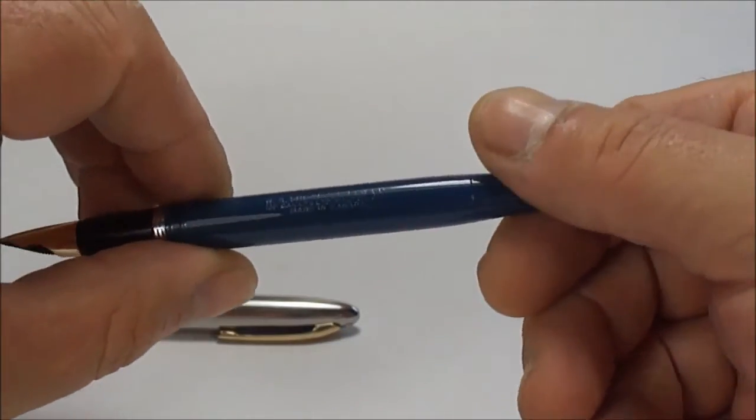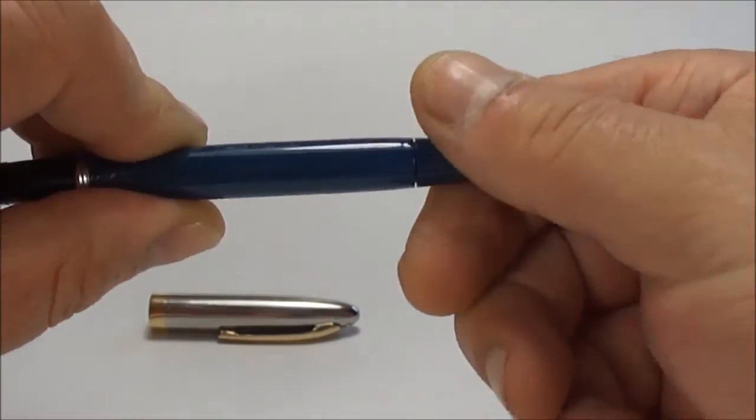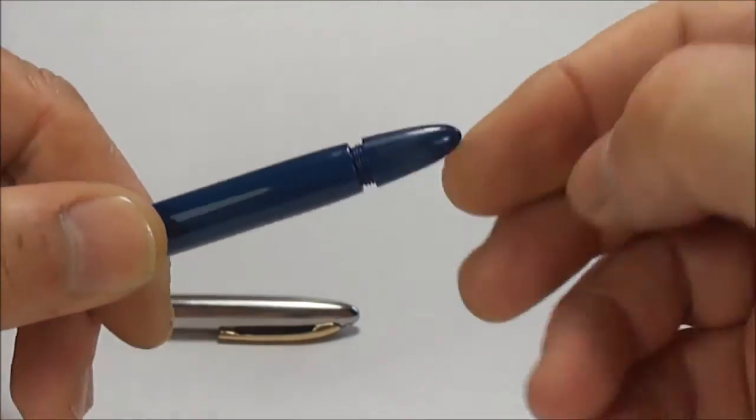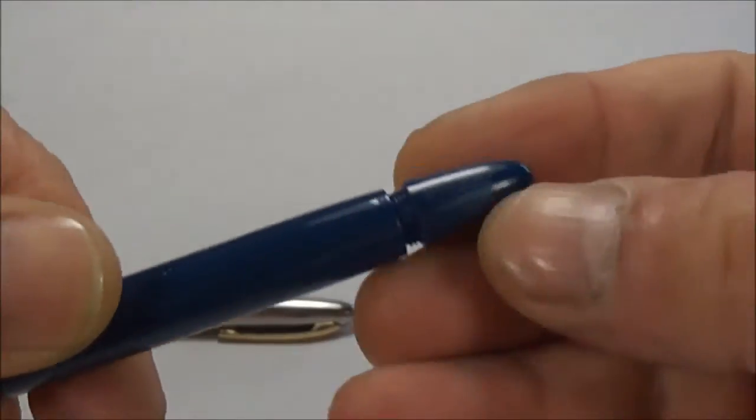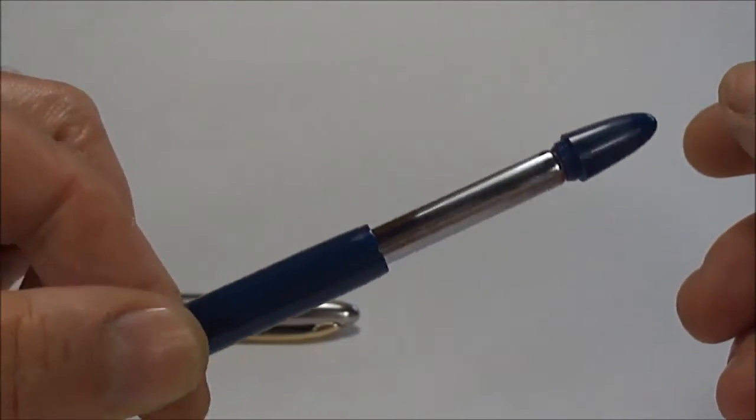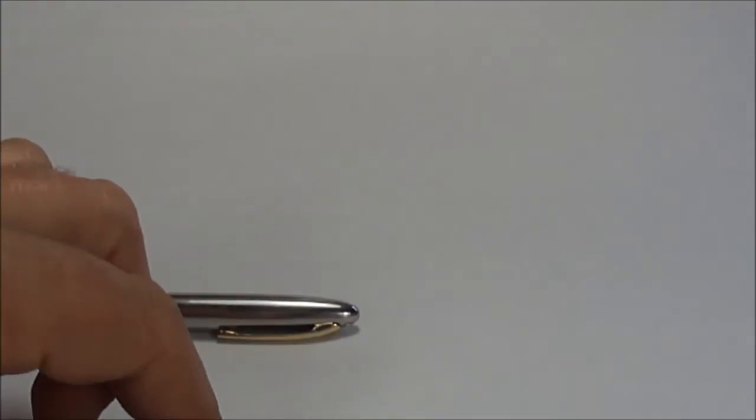Now to fill the pen what we simply do is we unscrew the knob to the very end of the barrel like so and we simply pull out the filler tube like so.